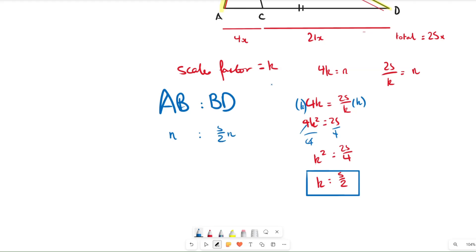So it's going to end up with 5 over 2 n. Obviously the n's cancel out so we get 1 to 5 over 2. But this is a fraction we don't really like, so we multiply both sides by 2 to get rid of that fraction. We end up with 2 to 5 as our final ratio for this question.